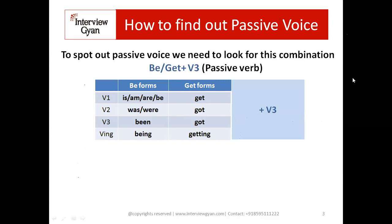How to spot passive voice in English — in Hindi it's easy because of 'dwara' sentences, but in English you need to find this combination: be or get plus V3 (third form of the main verb). This combination makes passive voice. Any form of 'be' or any form of 'get,' plus the third form of the main verb, gives us a passive verb. 'Be' is also a main verb — it's used as a helping verb too, but it is a main verb.